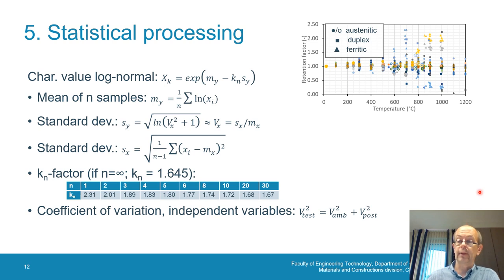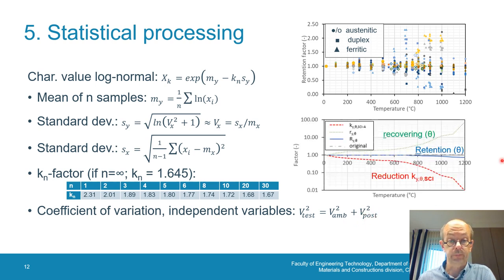We assume now that the coefficient of variation that we observed during the tests, out of the statistical dataset, that it is a composition of two independent variables: the coefficient of variation of the ambient properties and the one which are changed due to the post-fire behavior. It means that we've got a coefficient of variation in ambient conditions, then we're going to have a reduction of our properties due to the heating, we're going to have a recovering factor due to the cooling, and finally we end at a retention factor. This retention factor will be the subject of the post-fire coefficient of variation.